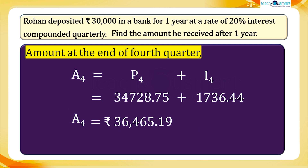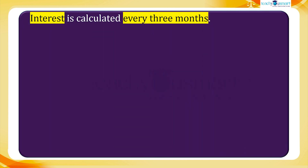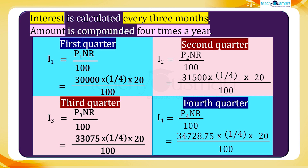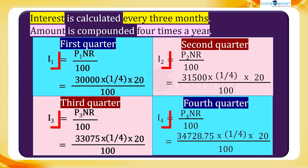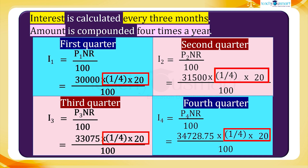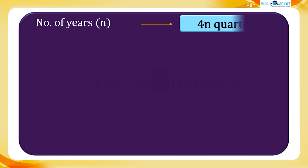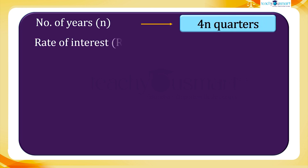From the above calculation, we can see the interest is calculated every three months and the amount is compounded four times a year. Since the interest is compounded quarterly, we compute the interest four times. The rate of interest becomes a quarter of the annual rate. When interest is compounded quarterly, the number of years N becomes 4N quarters.